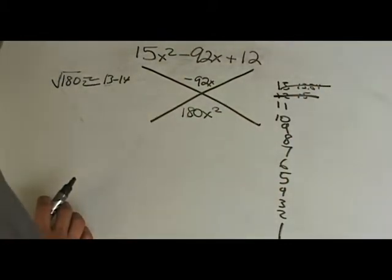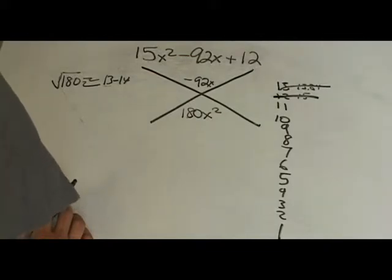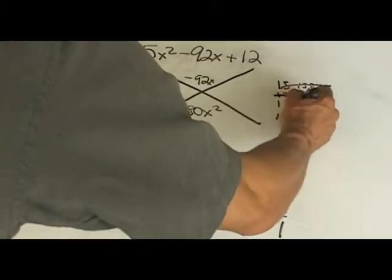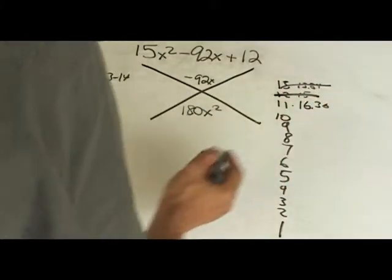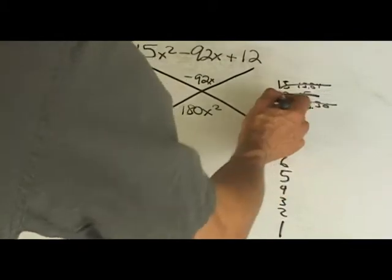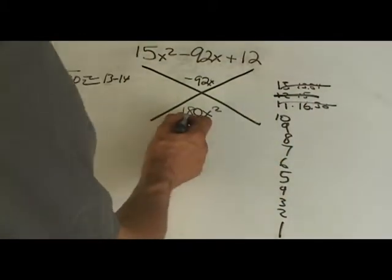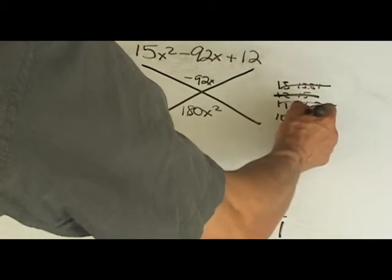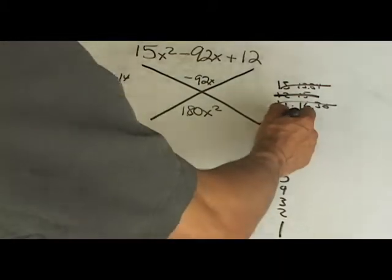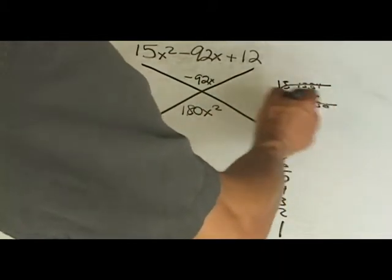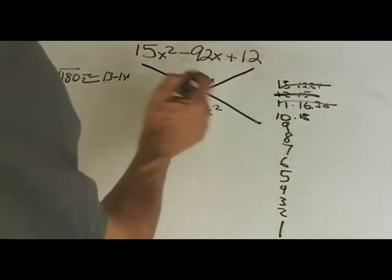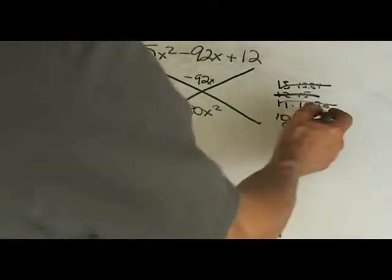So you go to the next number, 11. And what do you get? 180 divided by 11, something like 16.36. That's not an even number, so you can't do that. 180 divided by 10, well, you got 18. Well, that's even. 10 plus 18 is 28. So 28 is definitely not equal to negative 92. So that one doesn't work.